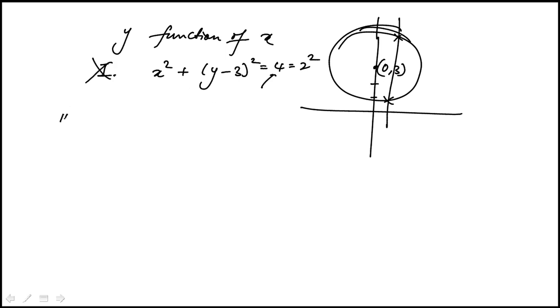So one is out. If you look at two, the table, for each of the y values we have a unique input. So this is a function.